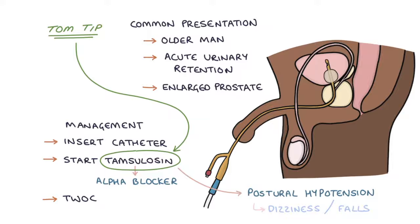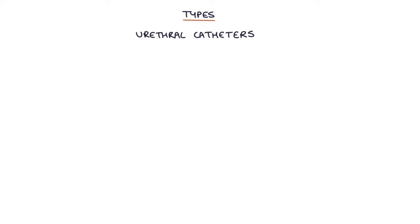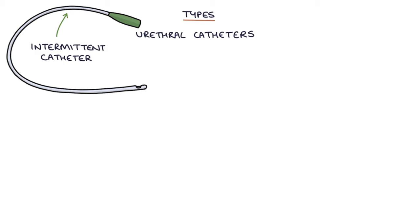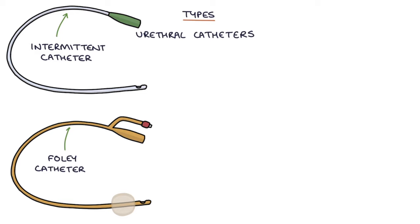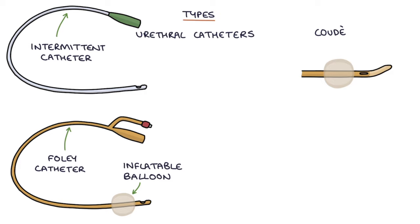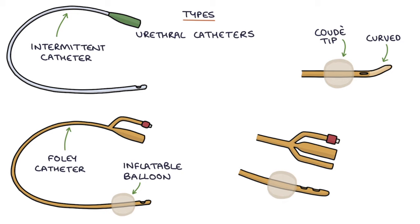Urethral catheters are inserted through the urethra into the bladder and come in various types. Intermittent catheters are simple tubes used to drain urine and then immediately removed. A Foley catheter, also known as a two-way catheter, is the standard catheter with an inflatable balloon on the end to hold it in place. A coude tip catheter has a curved tip which can help navigate past an obstruction such as an enlarged prostate. A three-way catheter has three tubes: one for inflating the balloon, one for injecting fluid into the bladder for irrigation, and one for draining fluid from the bladder.